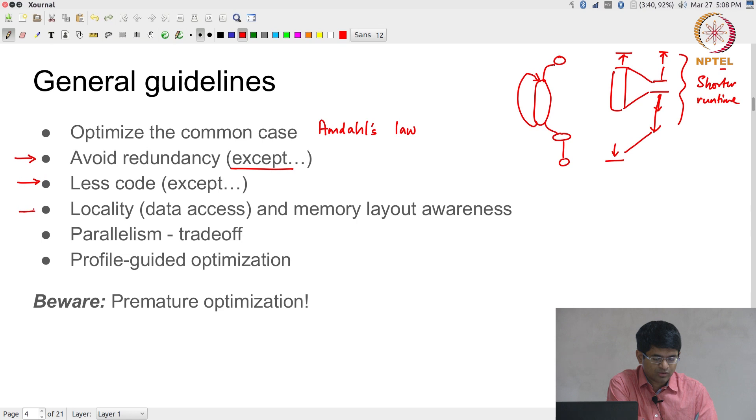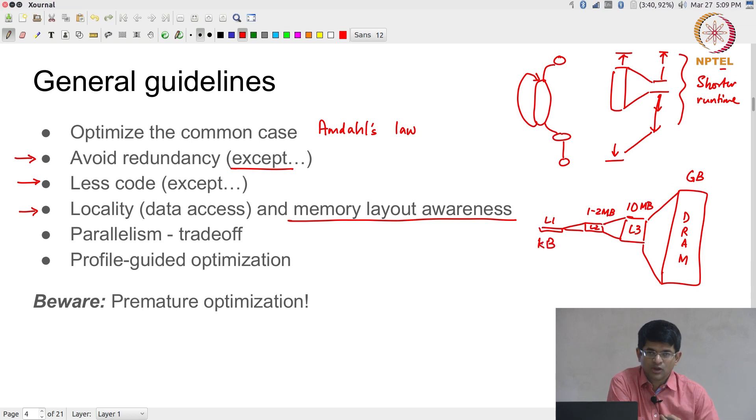One important thing, which again is related to what I said about the target-independent things still needing to know something about the target, is this thing which says you need to be aware of what your memory layout looks like. More than the memory layout, what I mean is the cache structure. Typically what happens is you have some large amount of DRAM, a small L3 cache, an even smaller L2 cache, and a really tiny L1 cache. Why I am saying tiny is this could be gigabytes, this could be tens of megabytes, this would be 1 to 2 megabytes, and this would be kilobytes in a typical processor. The speed with which you can access data written into those blocks of memory is inversely proportional to the size of the memory. So the smaller ones can be accessed faster in general. This actually makes a significant difference to how efficient your program becomes. You need to be aware of that when you are doing compilation.